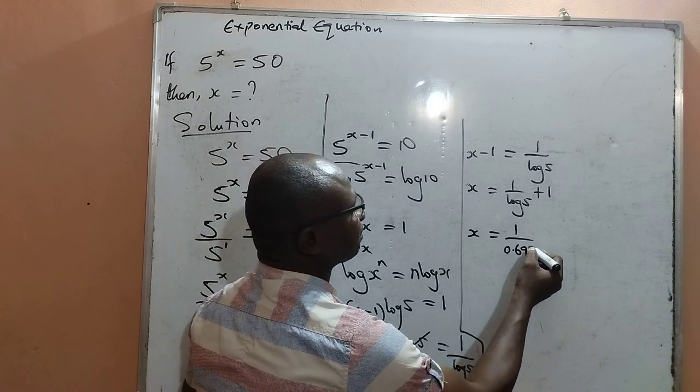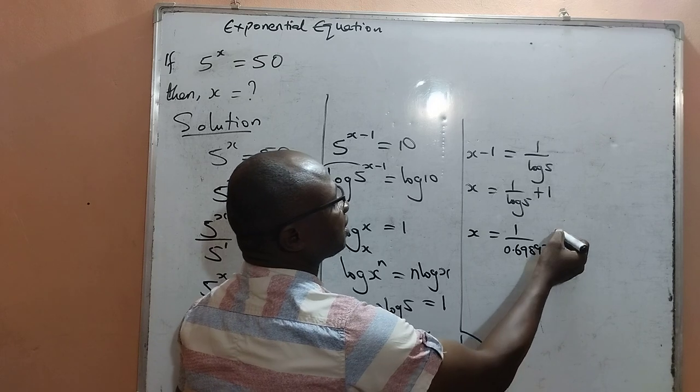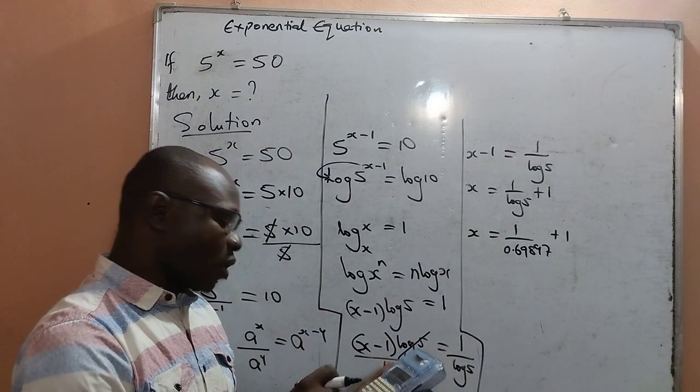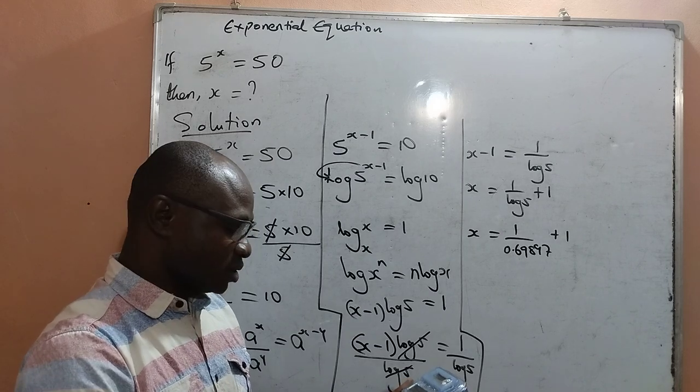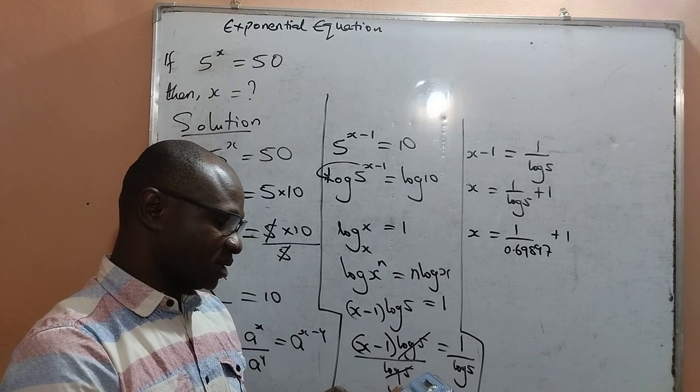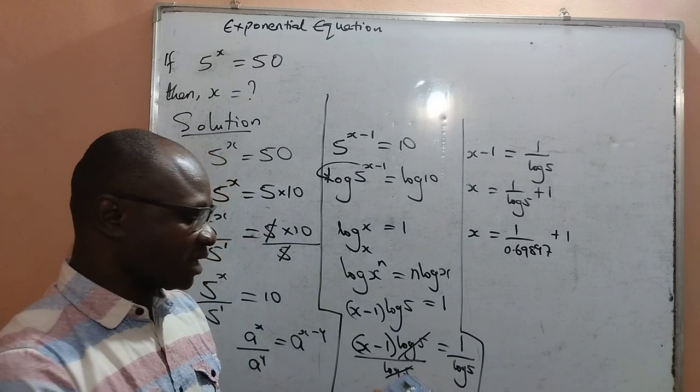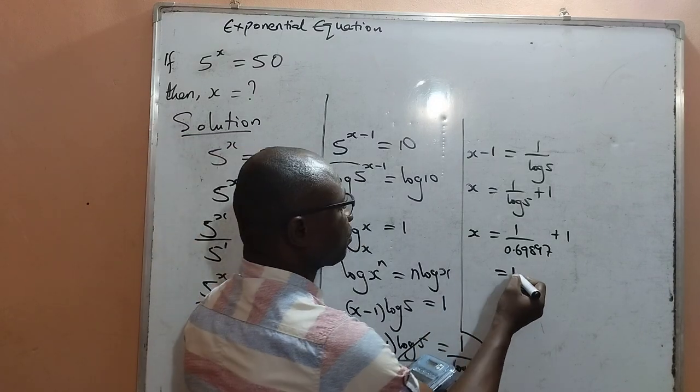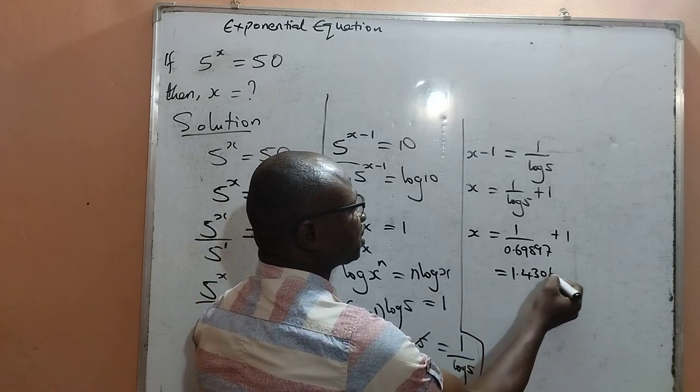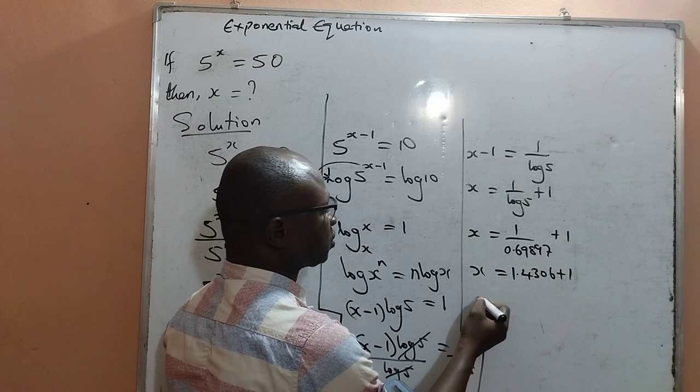0.6989789789, then plus 1. 1 divided by 0.69897 will give me 1.4306, then plus 1 equal to x.